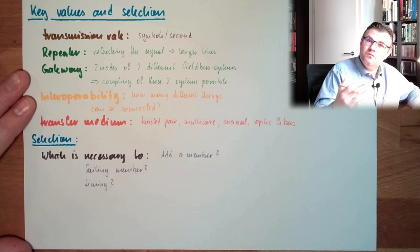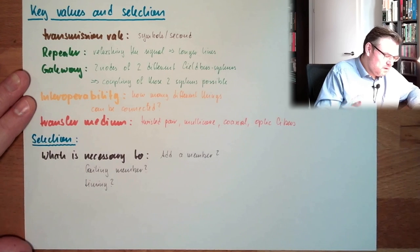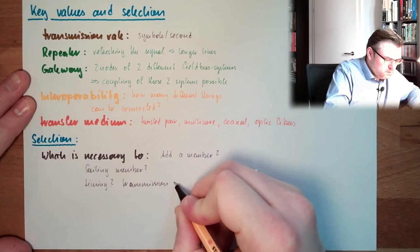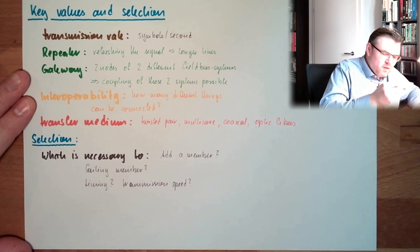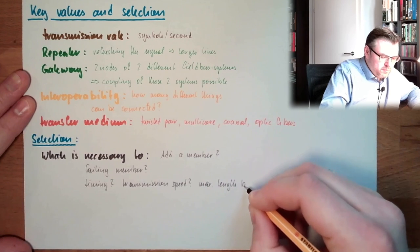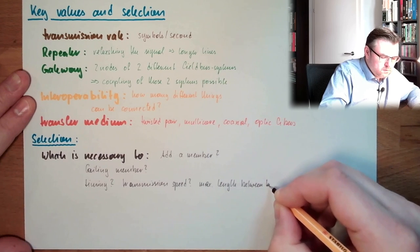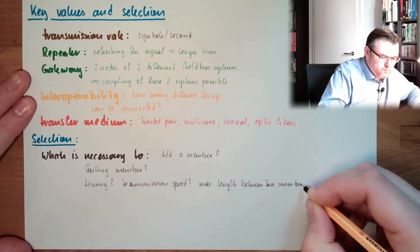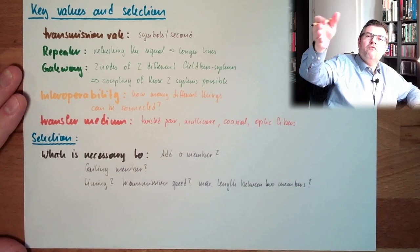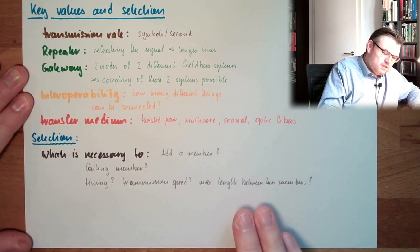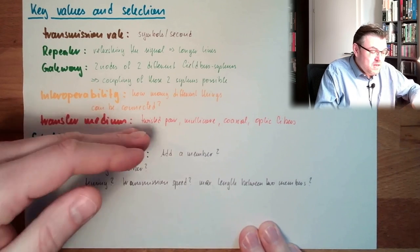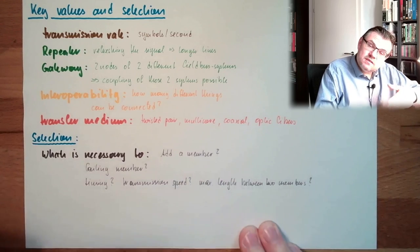What is the timing of our fieldbus system? What is the timing? Is it real time capable? Is it not real time capable? What is the transmission speed? What is the maximum length between two members? Usually we have some application in mind and then we know how far apart two members can be. Is this capable? Is this fieldbus system capable of managing this? Is a gateway necessary for instance? What transfer medium? Optic fibers usually have longer distances as possible.